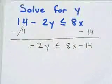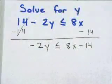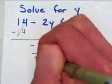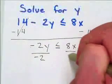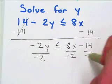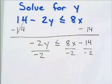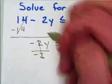Now, here's the only difference from when we had an equal sign. When I divide by negative 2 to get the y by itself, there is one special step that I have to follow. Divide by negative 2, I'm left with just y.